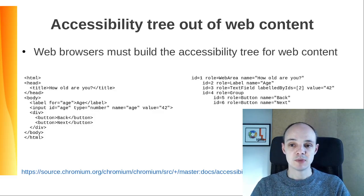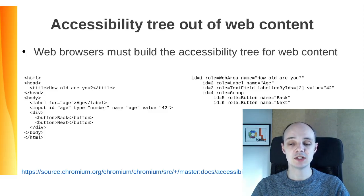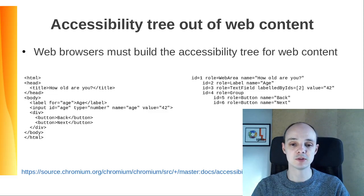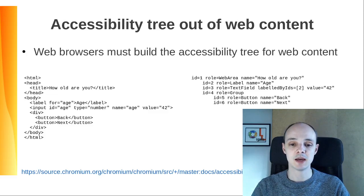Web browser developers must build the accessibility tree out of web content. They use HTML semantics to create the tree and populate it. This is a simple example taken from the Chromium project documentation. A simple HTML document is transformed into an accessibility tree. It follows more or less the tree structure of the HTML document. Notice how HTML semantics are used to fill the names of the items. The title tag in the heading is used as the name of the top-level web document node in the accessibility tree, and the text input is labeled by the item that is next to it.